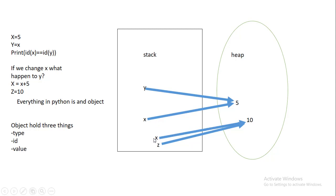Now what if we do z equals 10? Python creates another name z and the reference points to the same object as x. This is Python's way of optimizing — it would be needless for Python to keep creating separate 10 objects. In other languages, you would have two separate variables and two separate values of 10 on the memory.